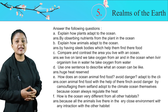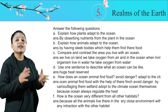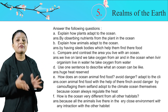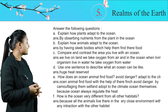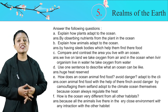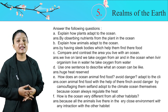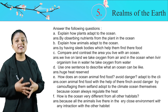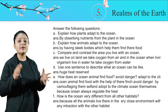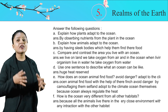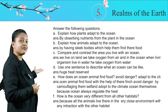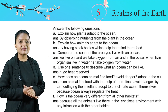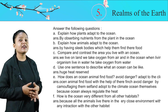How does an ocean animal find food, avoid danger, and adapt to the climate? Ocean animals find food with the help of their fins, avoid danger by camouflaging themselves, and adapt to the climate through oceans, because oceans always regulate heat. How is the ocean very different from all other habitats? Oceans are very different from all other habitats because all the animals live there in a very closed environment without any interaction with the other habitats.